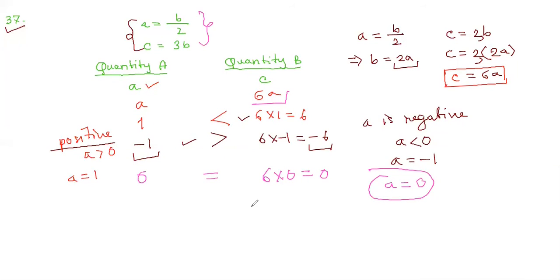For different cases we get different results: in case 1, quantity B is greater; in case 2, quantity A is greater; in case 3, they are equal. Since we get different outcomes, we cannot determine the relationship from the information given, so the answer is T.